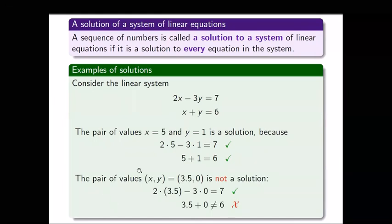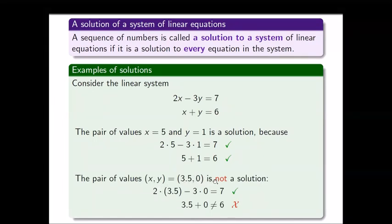On the other hand, the pair x, y equal to 3.5, 0 is not a solution to the system because, while it satisfies the first equation giving 7 minus 0 equals 7, it does not satisfy the second one. Therefore 3.5, 0 is not a solution to the system.